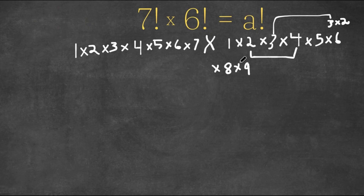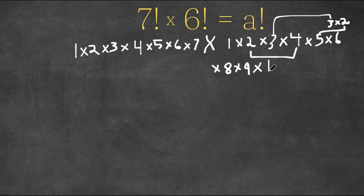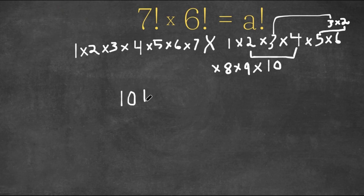And our next term in this sequence would be 10. And 10 would equal this 5 times this 2, so that would equal 10. Now, as you can see, all we have left is 1, which doesn't really count because anything times 1 is just itself. So now we have all the numbers 1 through 10 multiplying with each other.